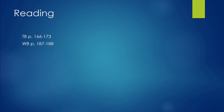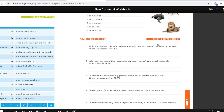In your workbooks you find some questions on pages 187 to 188 — that's exercise 7.12. We are going to go over the questions first. First question: right from the start, the author creates tension by his description of how the rat catcher walks. You have to quote the passage in which the author describes the rat catcher.